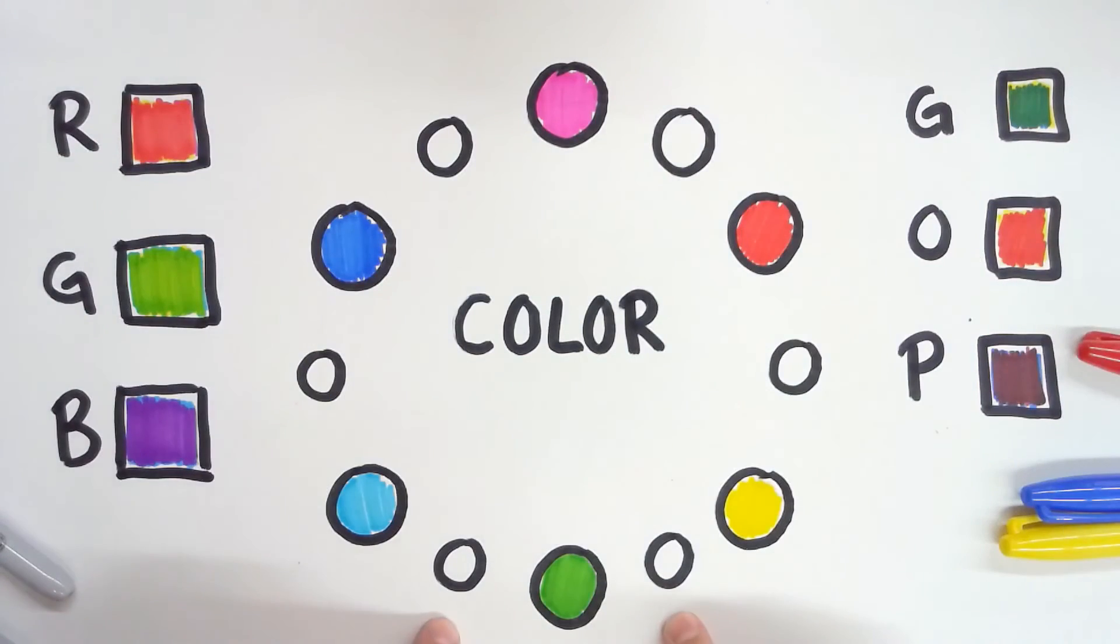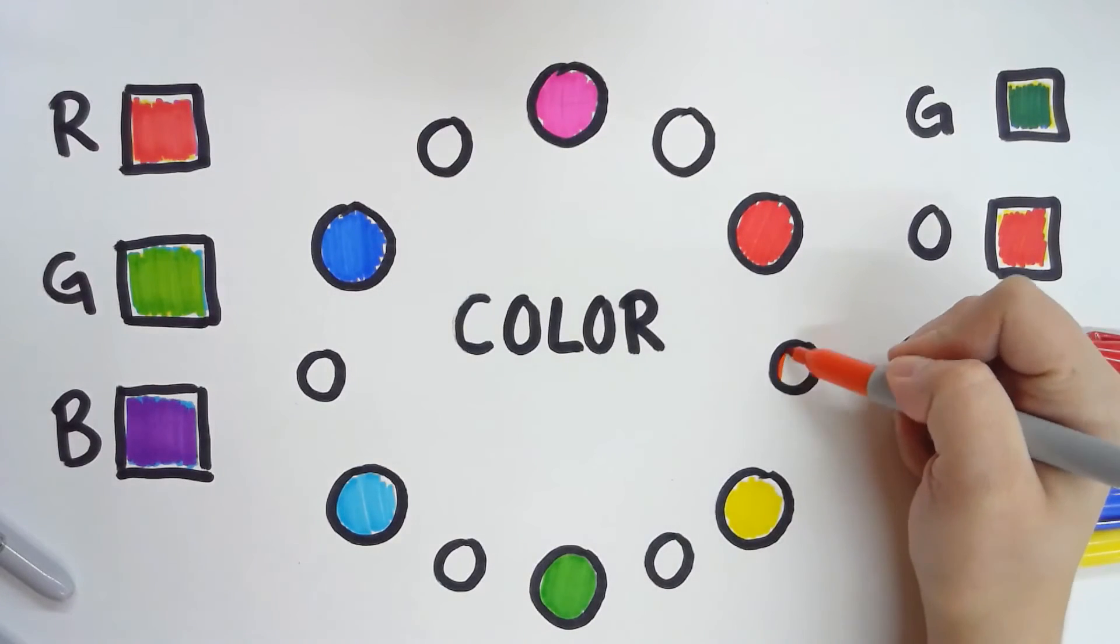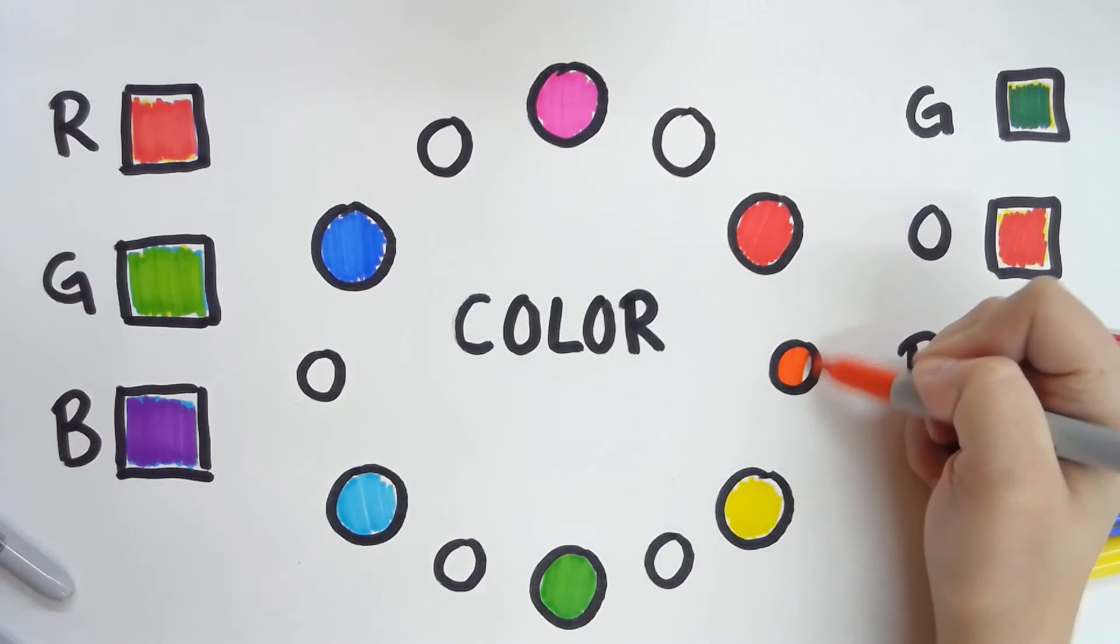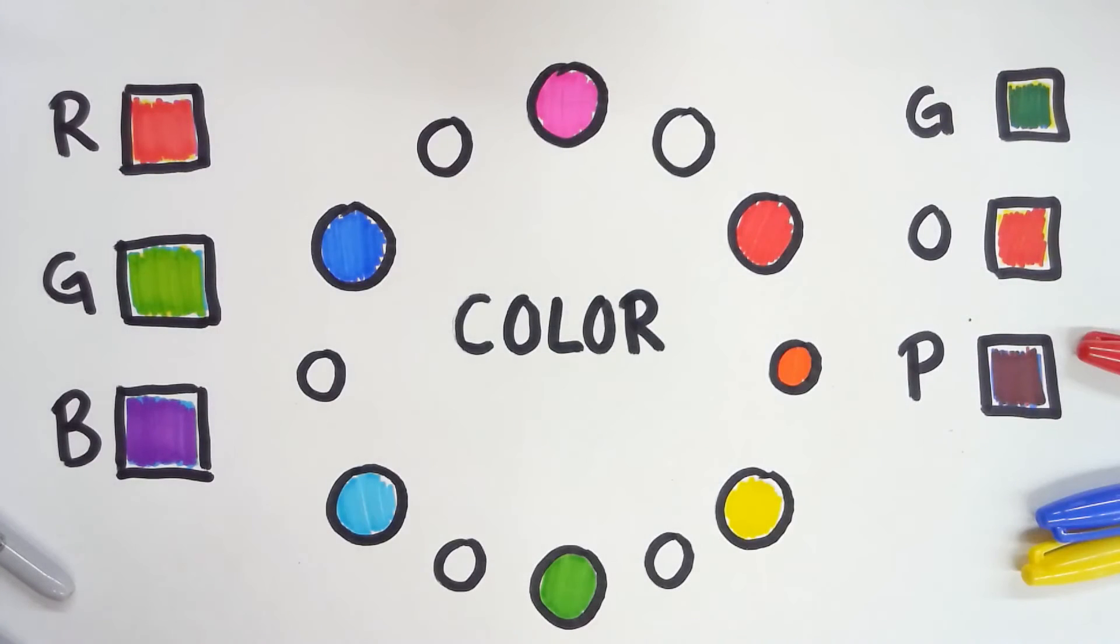And then we have these tertiary colors in between. Some people call them intermediate colors. And this is basically what happens when you mix a primary and a secondary together. So one that you probably know is orange, because you mix red and yellow together, you get orange. So that still works. And then we also have yellow-green. Yellow plus green equals yellow-green.